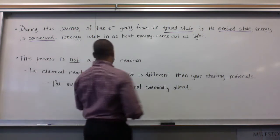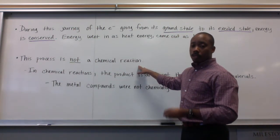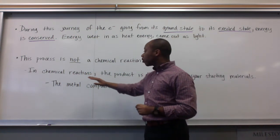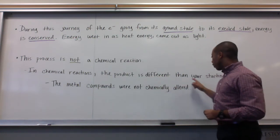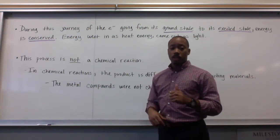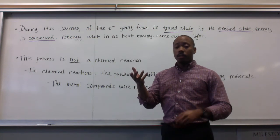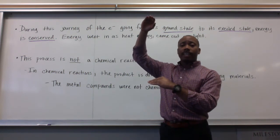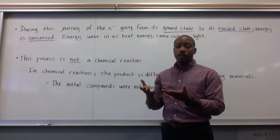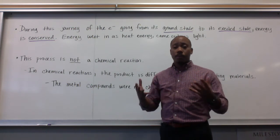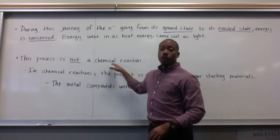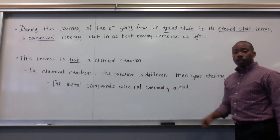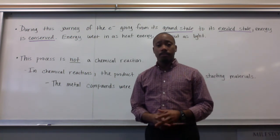One thing to note: this is not a chemical reaction. That color change, that flash of light, was not a chemical reaction. Because in a chemical reaction, the product is different than your starting material. Here, we had potassium ions to begin with — we introduced heat energy, the electron went up to its excited state and came back down to its ground state, and we still had a potassium ion. It did not change into something different, thus it was not a chemical reaction. The metal compounds were not chemically altered. Gentlemen, take notes on this, come to class prepared to discuss it. Adios.